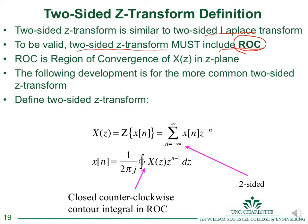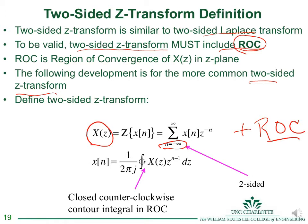We'll focus more on using the two-sided Z-transform because it's most common in signal processing. The key difference is the summation runs from minus infinity to infinity, but you must also include the ROC along with X(z). The inverse transform is still the contour integral inside the region of convergence.